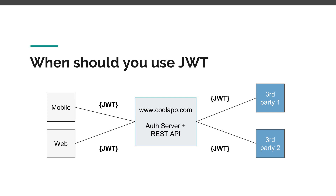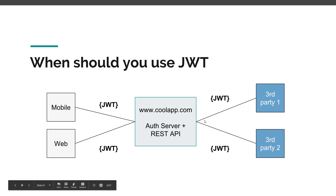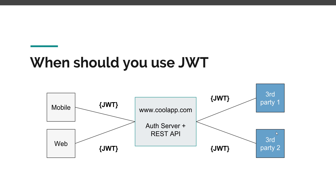You should use JWT when you want to centralize the authentication and authorization part of your application. You'll have an authentication server handling auth, you'll expose REST API methods for your business logic, and then you want to create a mobile app, one or more web applications, or expose parts of your business logic to third-party customers. When your business core is shared across multiple UI apps and multiple clients — internal or external — that's when you should use JWT.